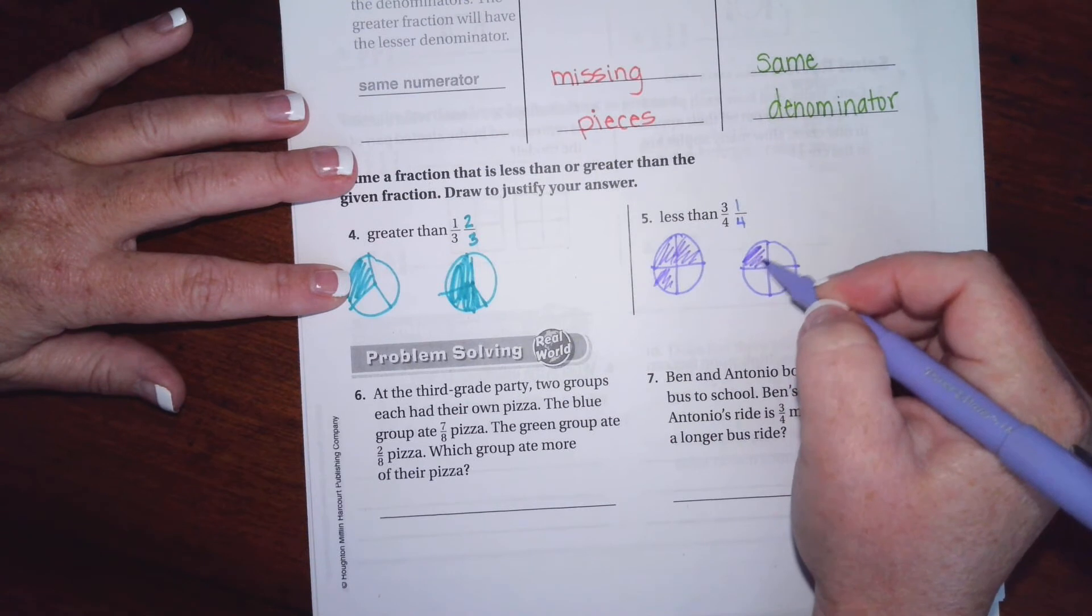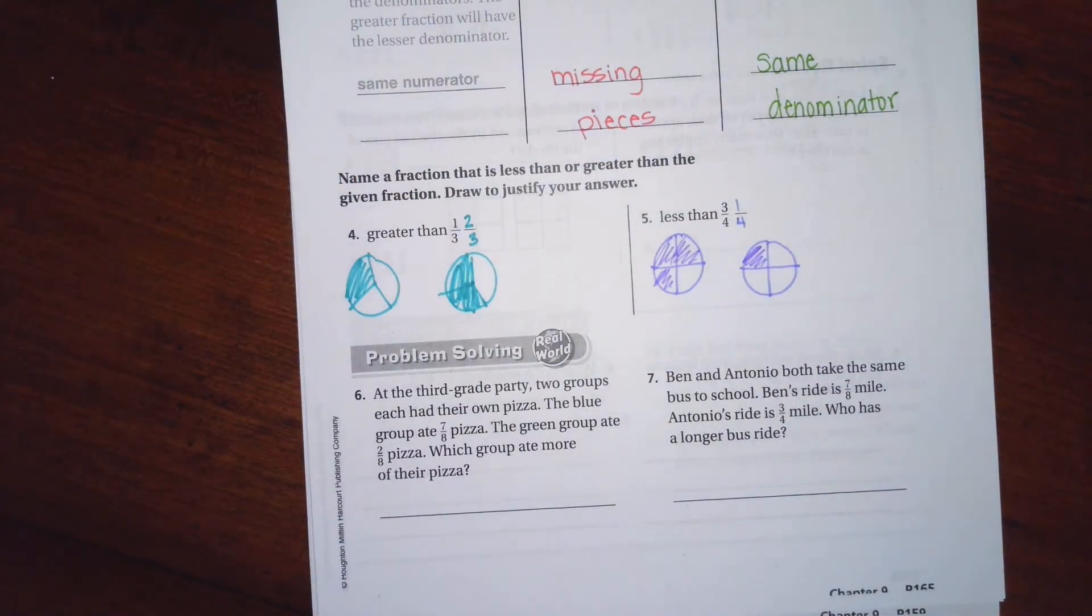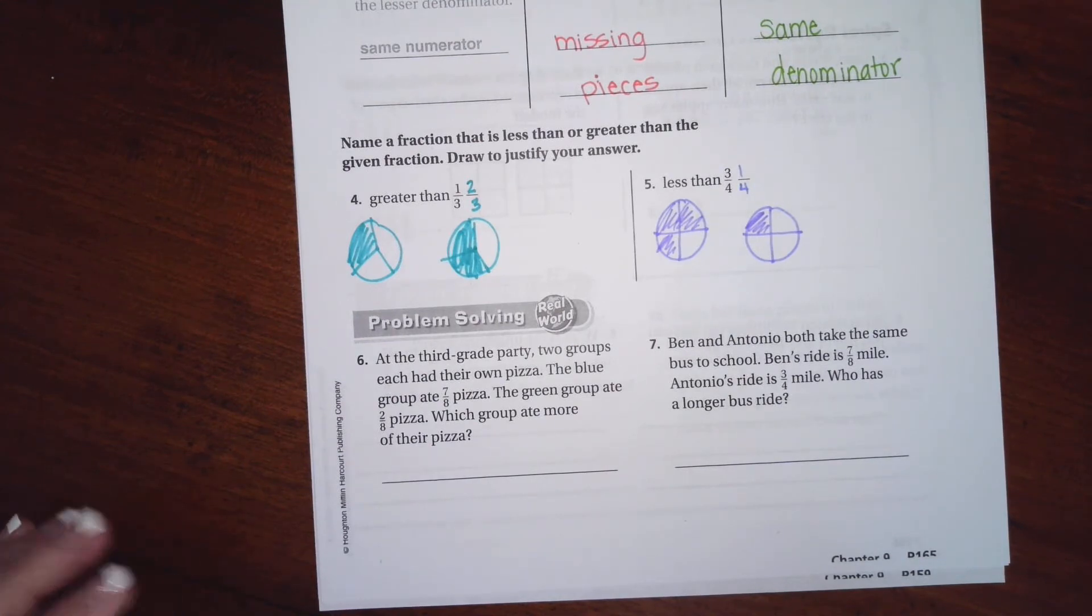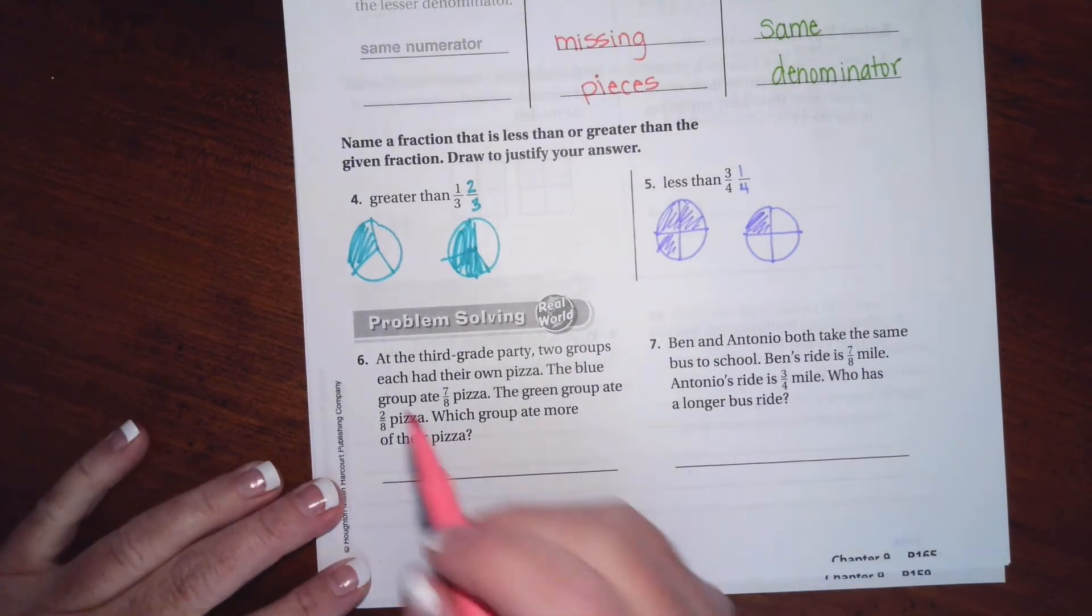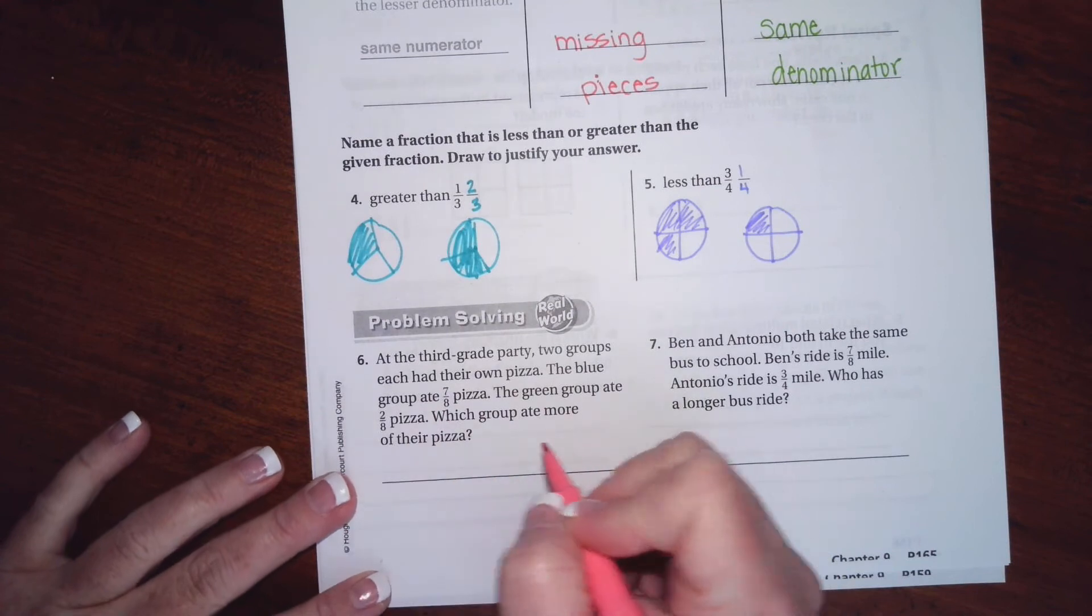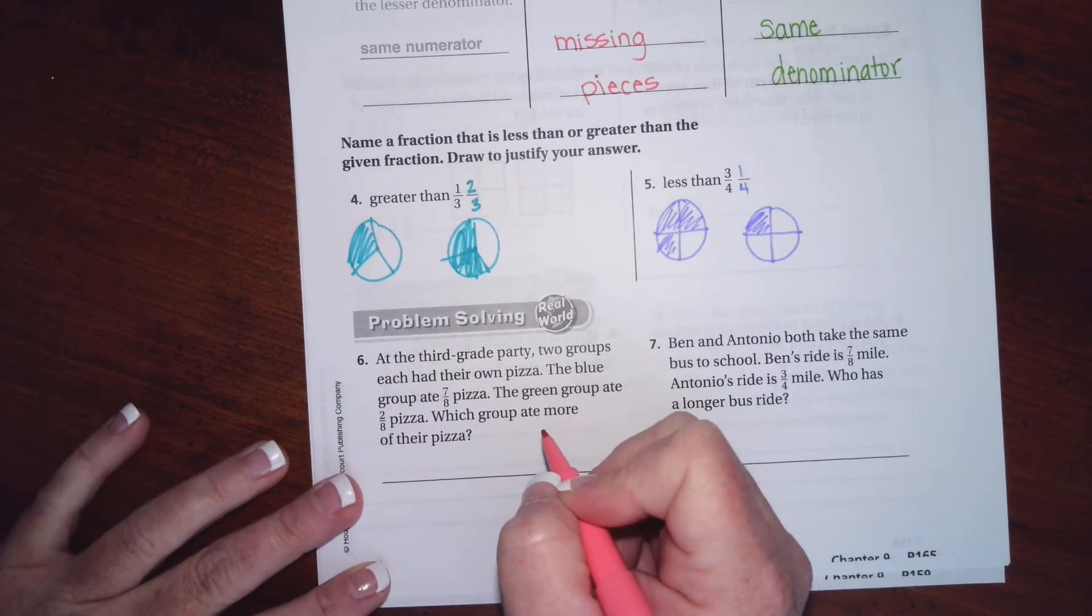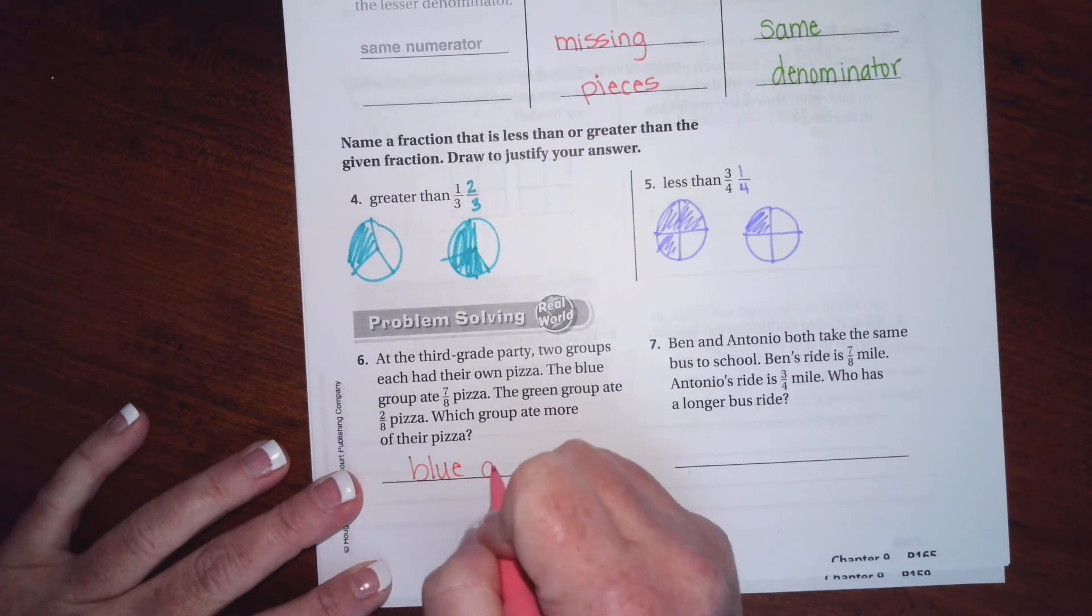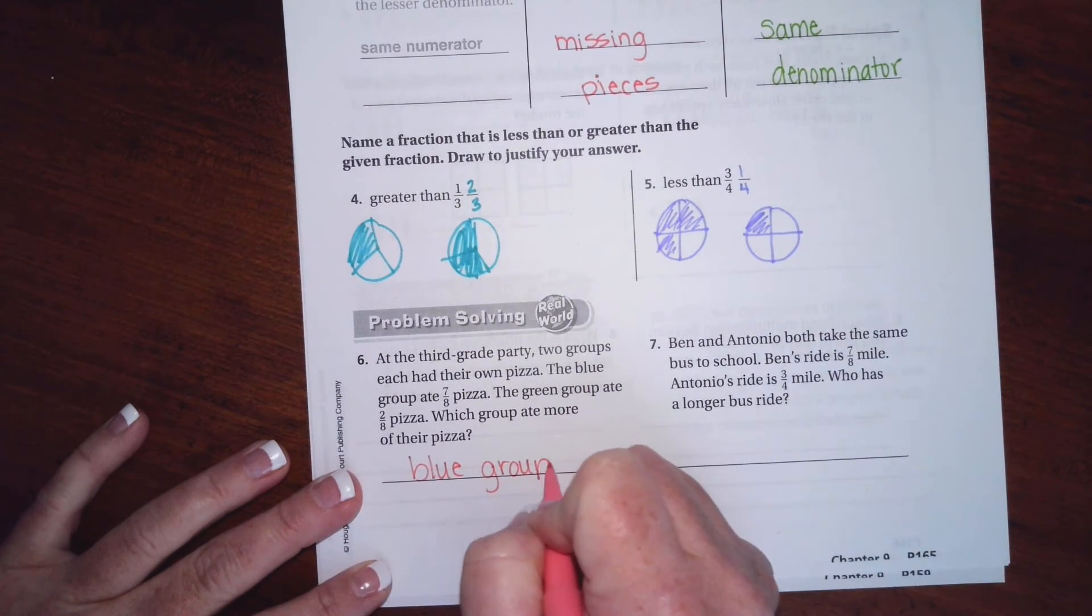At the third grade party, two groups each had their own pizza. The blue group ate seven eighths, the green group ate two eighths. Which group ate more? Well, seven eighths or two eighths, which one's bigger? The seven eighths is, so it's going to be the blue group.